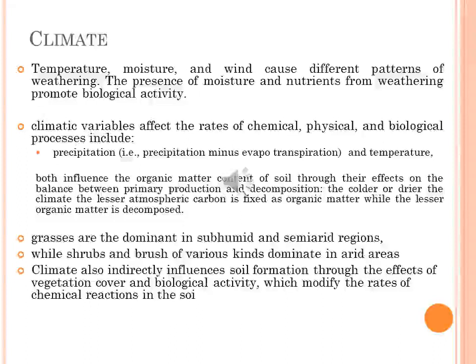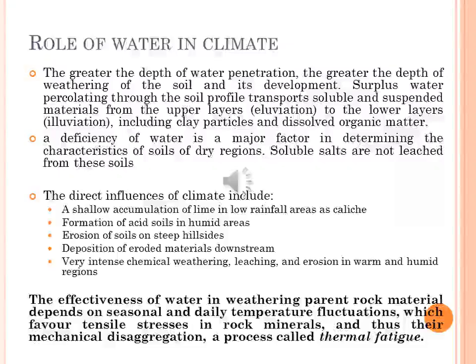According to climatic determination of biomass, humid climates favor growth of trees. Grasses are dominant in native vegetation in subhumid and semi-arid regions, while shrubs and brushes dominate in arid areas. Climate also indirectly influences soil formation through its effects on vegetation cover and biological activity, which modify the rates of chemical reactions in the soil. The availability of water for all major chemical weathering reactions depends on seasonal rainfall distribution, evaporative losses, site topography, and soil permeability, all of which interact to determine how effectively precipitation can influence soil formation.